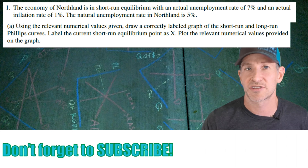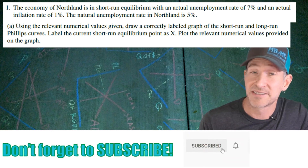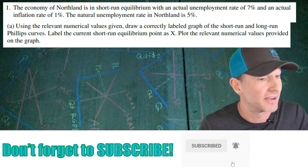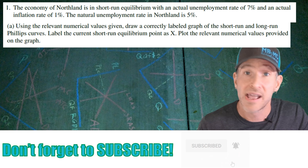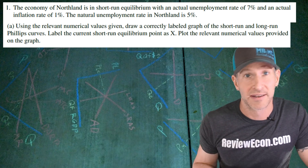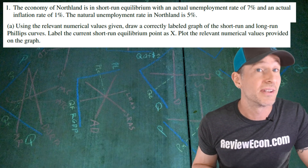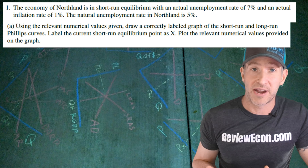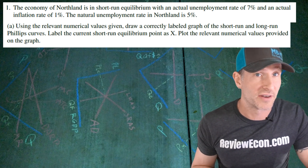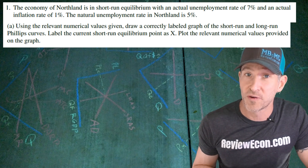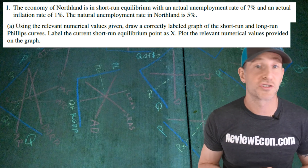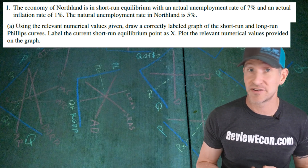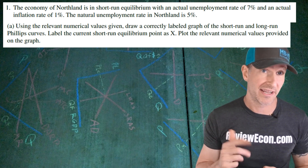This question starts off with the country of Northland. Northland is currently in a short-run equilibrium with a current unemployment rate of 7% and an inflation rate of 1%. Also, the natural rate of unemployment for Northland is 5%. For part A, we have to draw a long-run and short-run Phillips curve for the country of Northland. We're going to label the short-run equilibrium point X and use the numerical values from the question in our graph.